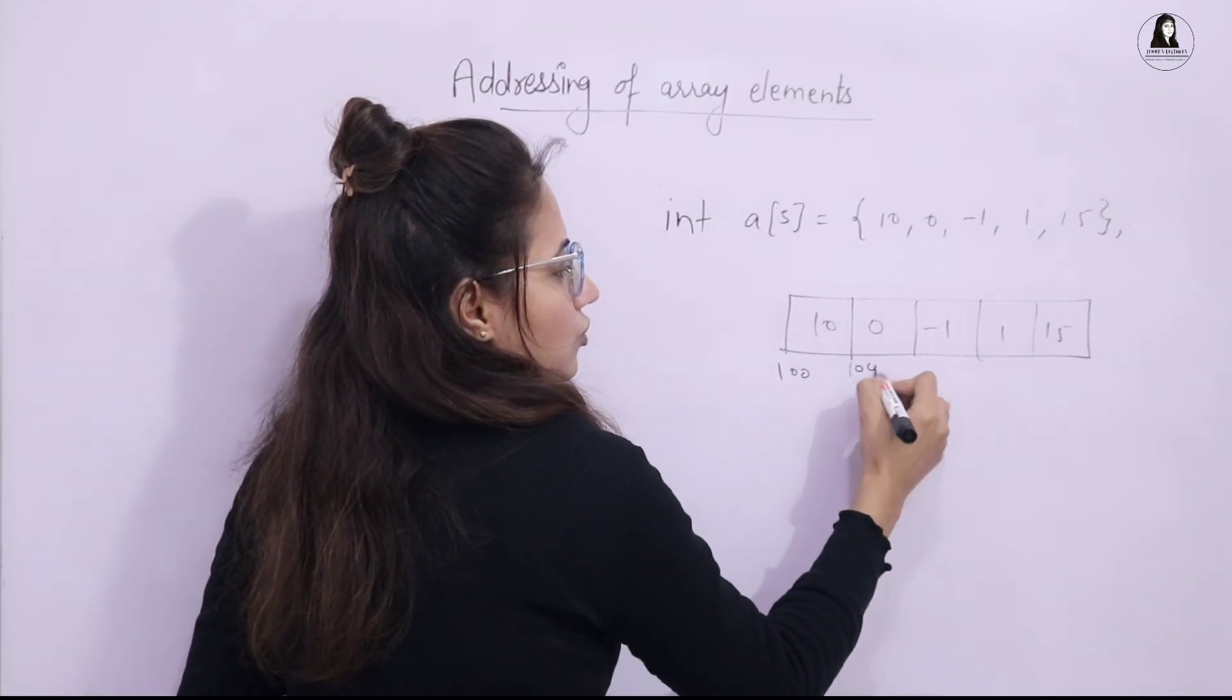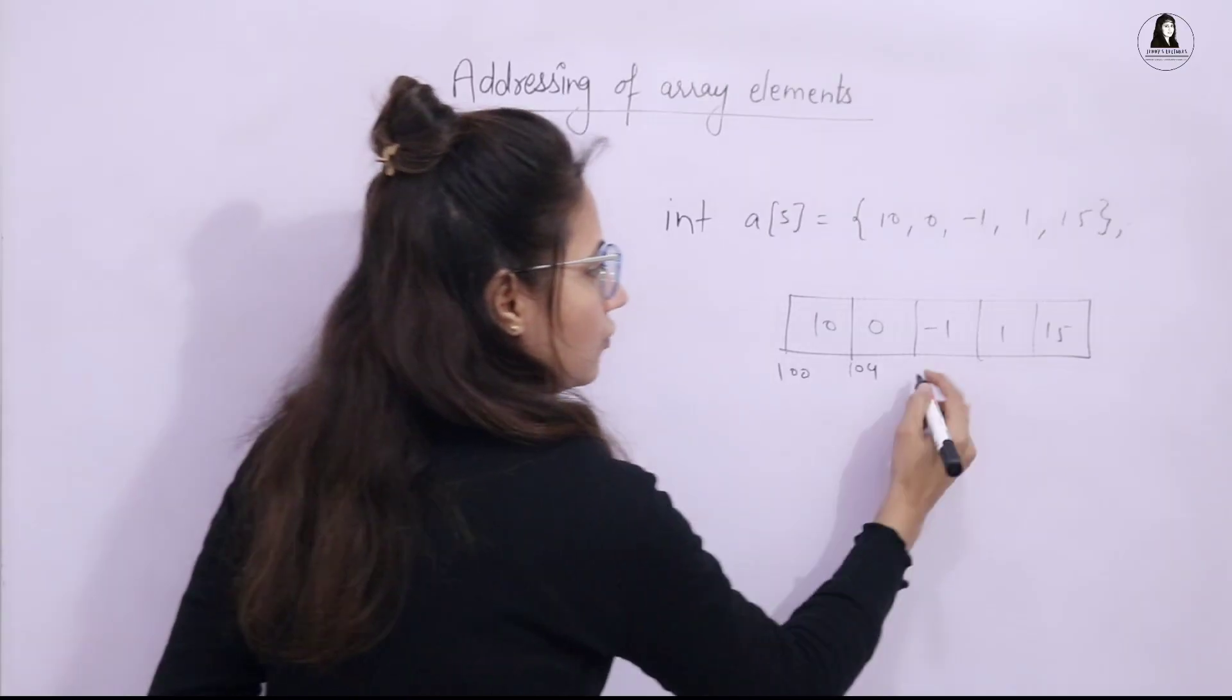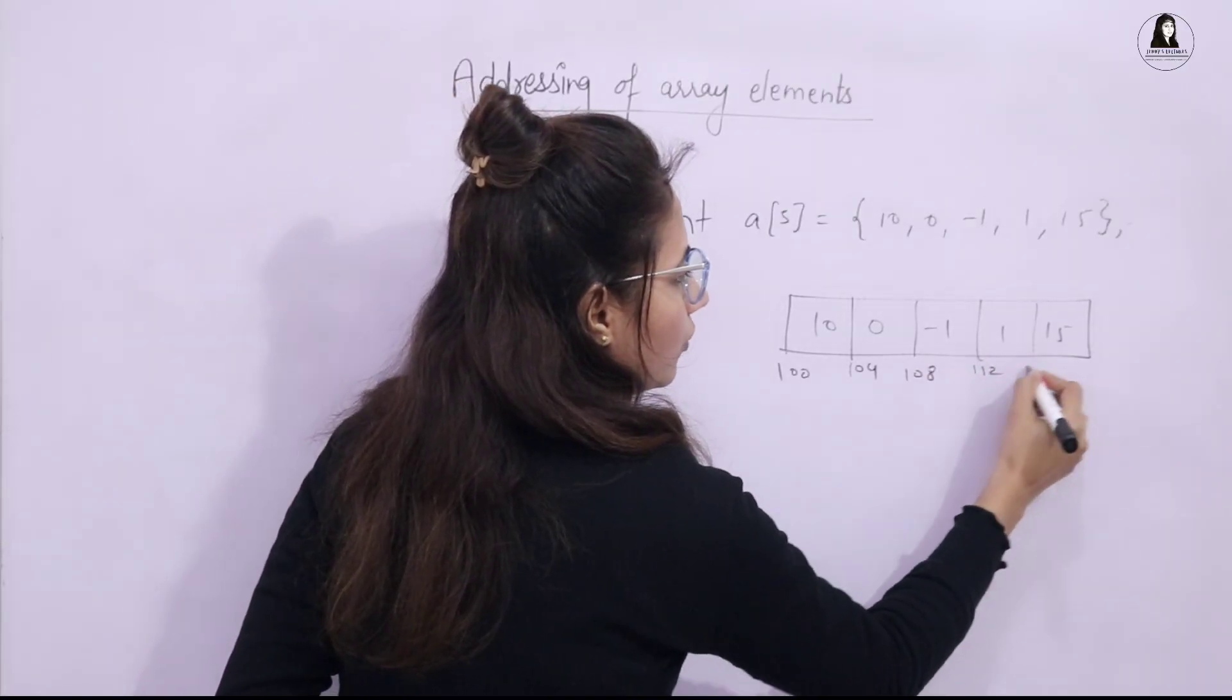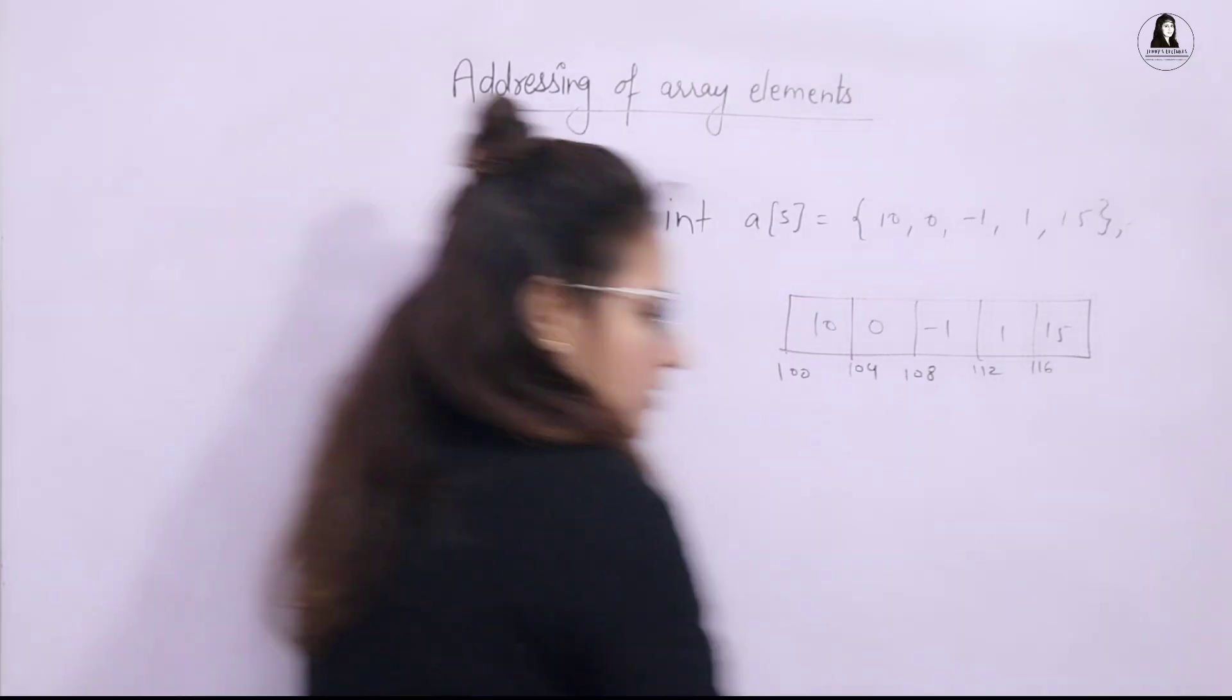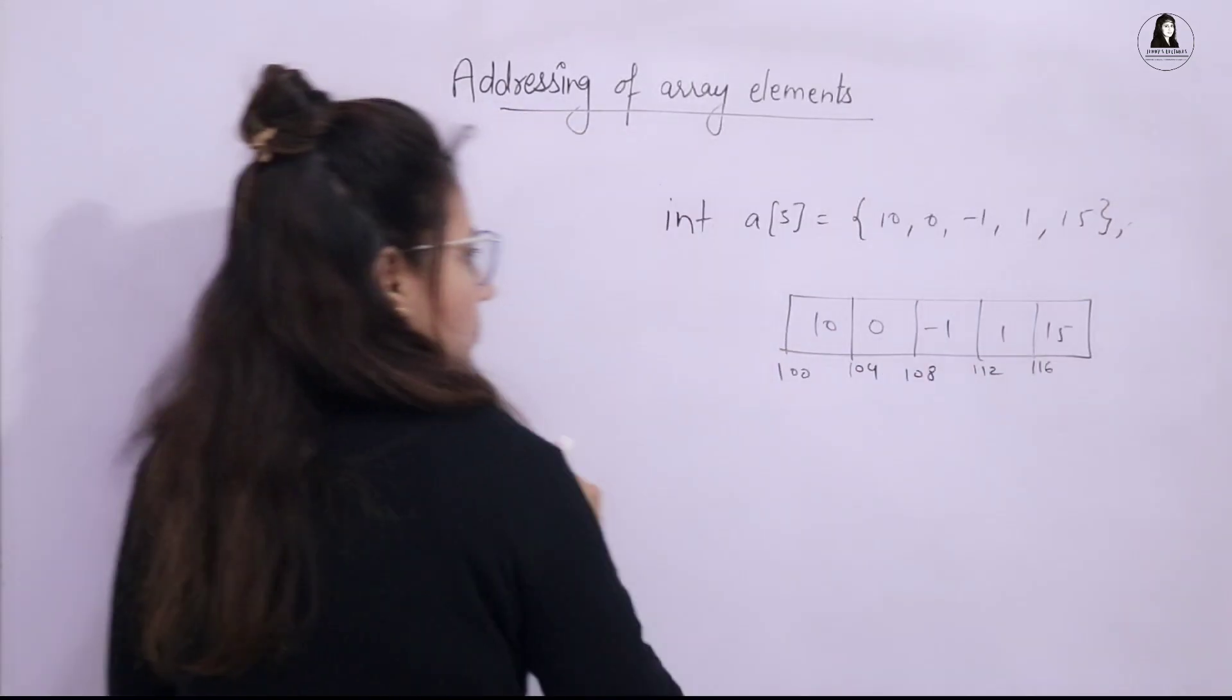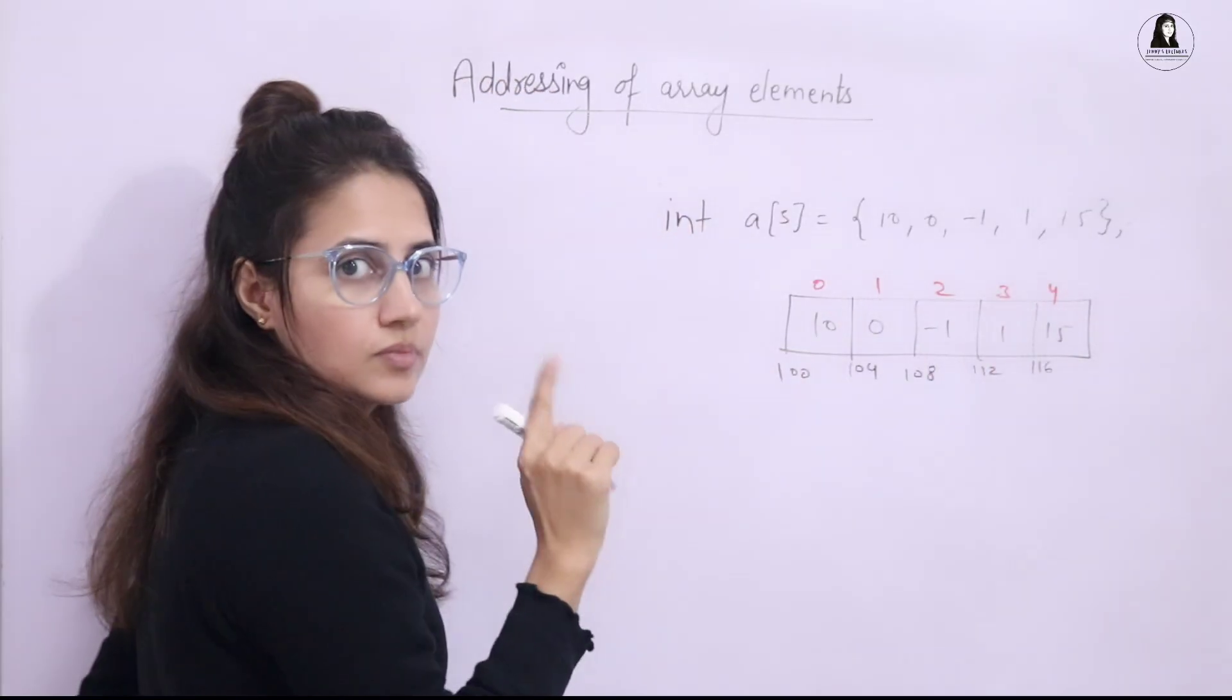100. Now the next element would be at 104 because this is going to take 4 bytes, 1 element. 104, 108, 112 and 116. Index always starts from 0: 0, 1, 2, 3, 4, the index.